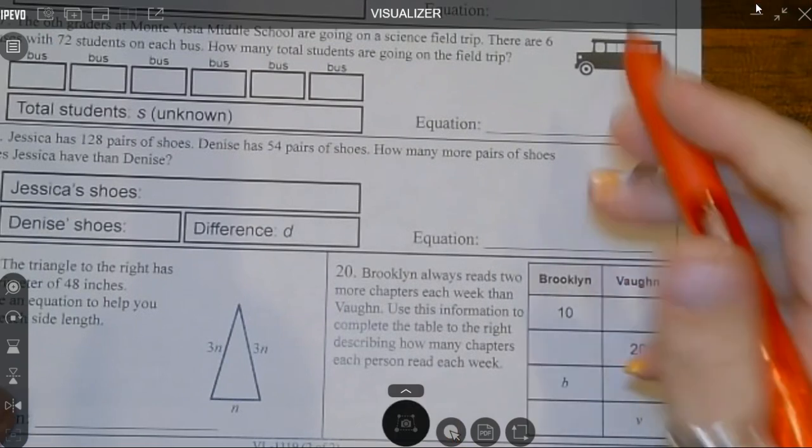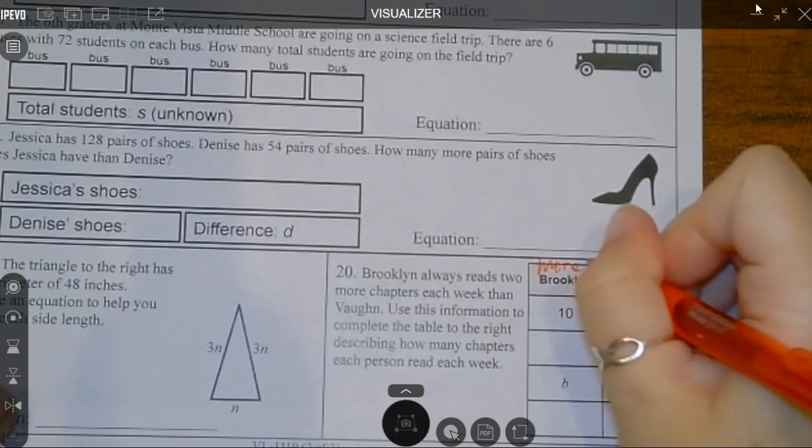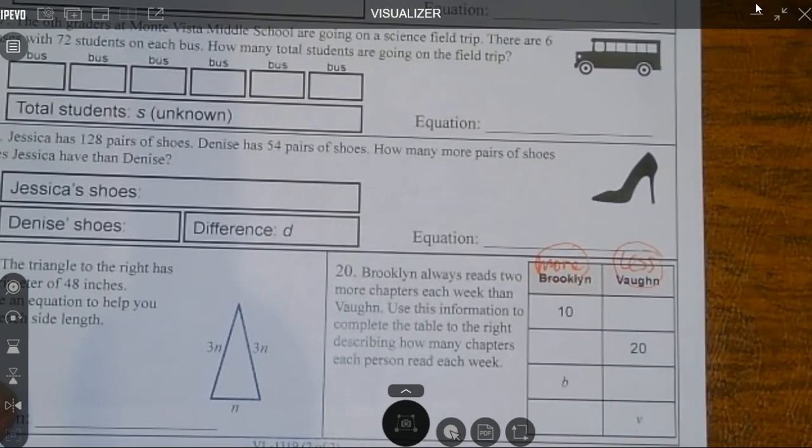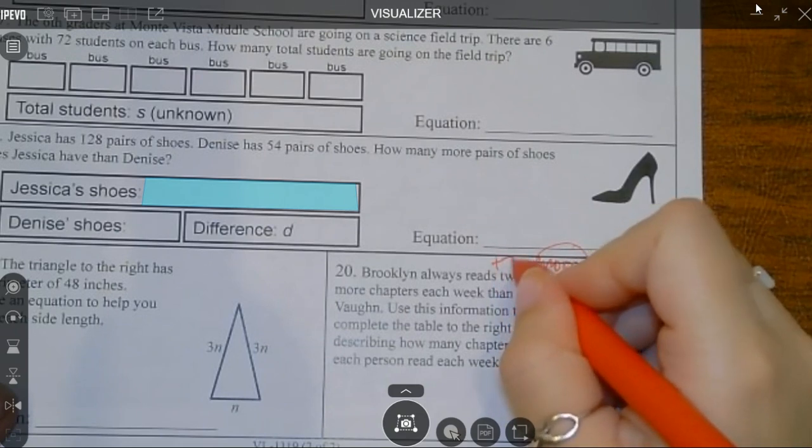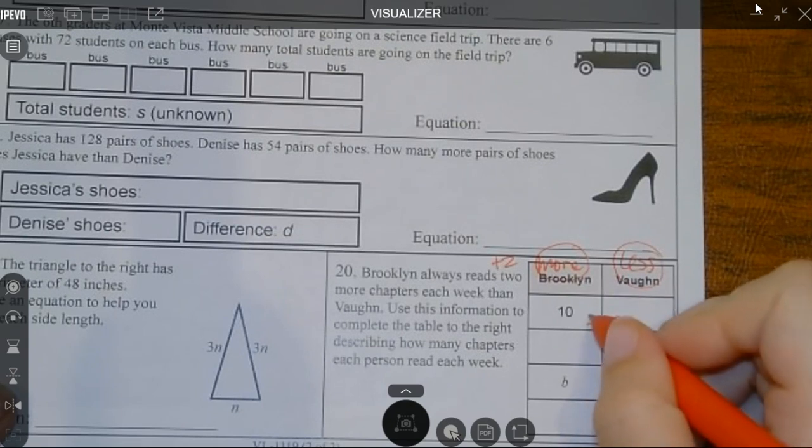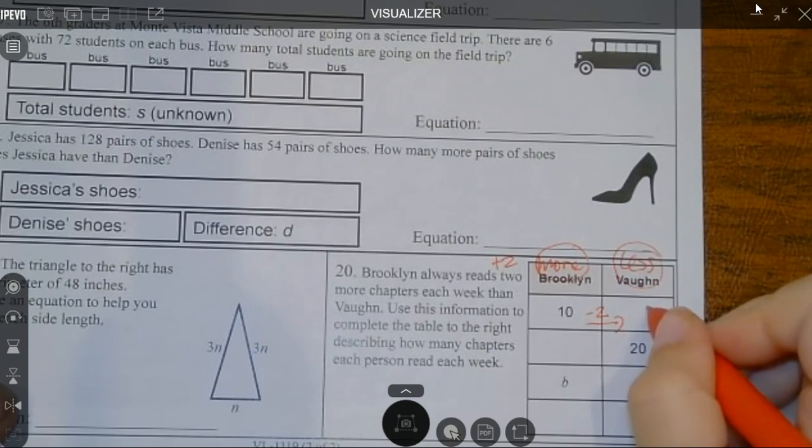It says Brooklyn always reads two more chapters each week than Vaughn. So who reads more? Brooklyn reads more, which means Vaughn reads less. And it says Brooklyn always reads two more. Okay, so plus two. So if I'm going from Brooklyn to Vaughn, should I add two or subtract two? I'm going towards the lesser amount. So I should subtract two and 10 - 2 = 8.